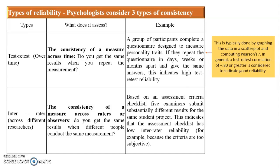The next type is inter-rater or inter-observer reliability, which asks whether you get the same result when different people conduct the same measurement. For example, if one student submits a project and five examiners all give different assessments for that same project, we say it has low inter-rater reliability, because all observers are giving different kinds of assessment.